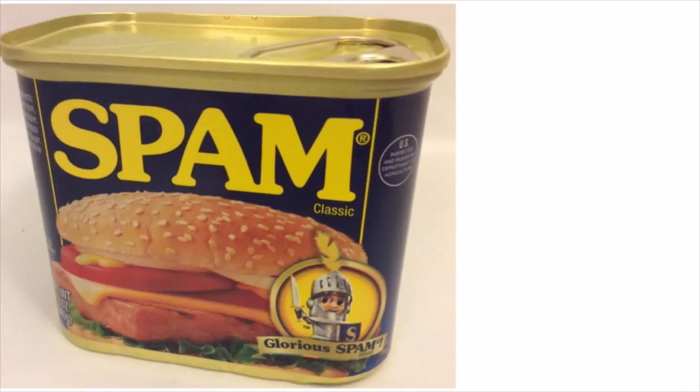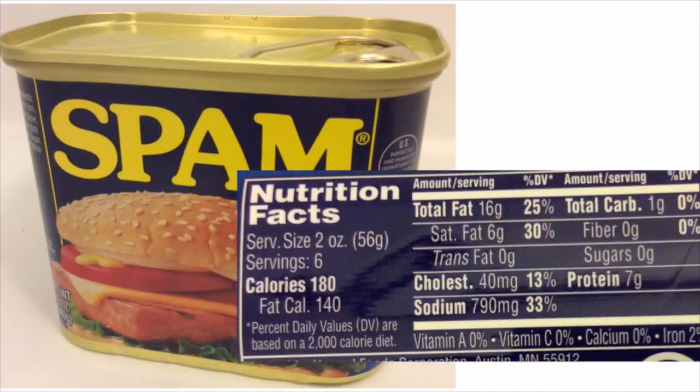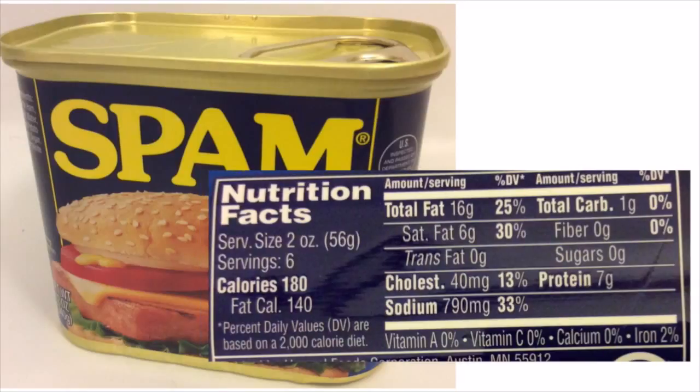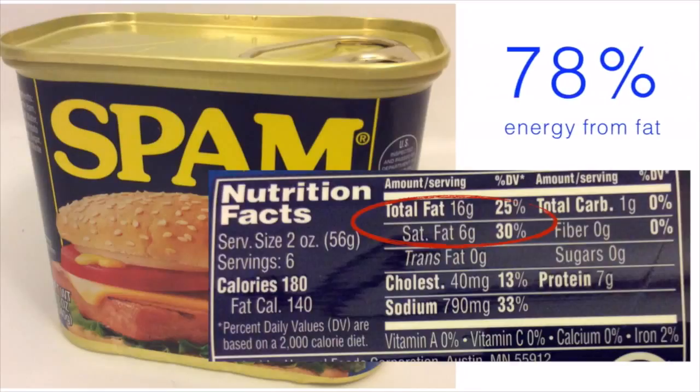Half of this preserved pork with ham can, 56 grams total, contains 16 grams of fat, 6 of which saturated. If you were to eat the whole can, you would be eating 32 grams of fat, equivalent to about 280 calories from fat.